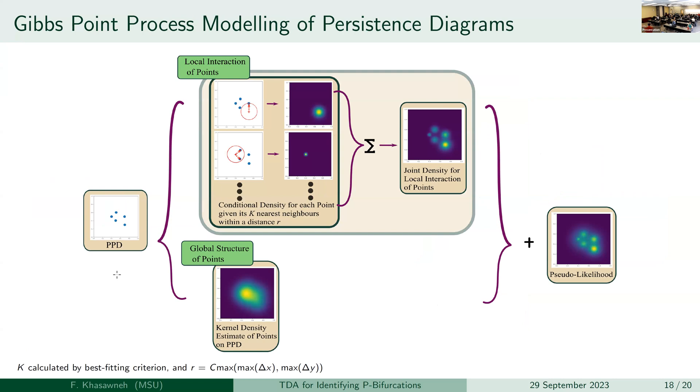So let me talk just a little bit about the terms that I was mentioning. So we have our persistence diagram and we get the kernel density estimate of the points using any method you want. So this step, you just feed it your persistence diagram. It gives you back a KDE. That represents the global structure in the persistence diagram. The local interaction term is a bit more complicated. So for that one, we are computing the conditional density for each point, given K of its neighbors that are within some distance R. And so we do that for every point. We generate that local interaction term. Then we add them all up. So what you see there on the right, the big box is the joint density for local interaction points. And then we add the one that we obtained for the global structure of points from the KDE of all the points and the local interaction of the points, which will give us a pseudo likelihood. And then that's what we use in generating the new persistence diagrams.